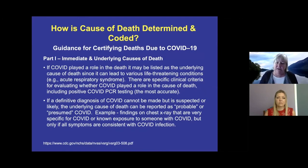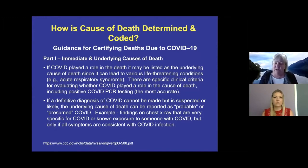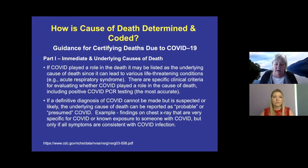The CDC did come out with guidance on how to certify deaths due to COVID. In Part 1 of the death certificate, if COVID played a role, it can be listed as an underlying cause of death, because it can lead to other things that actually cause the death, such as acute respiratory syndrome or respiratory distress. There are very specific clinical criteria for determining whether COVID played a role, and the biggest one is that the patient had to have a positive COVID test that then led to those other conditions resulting in death.